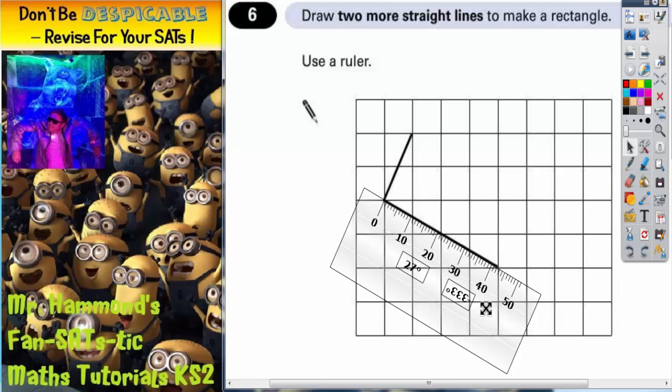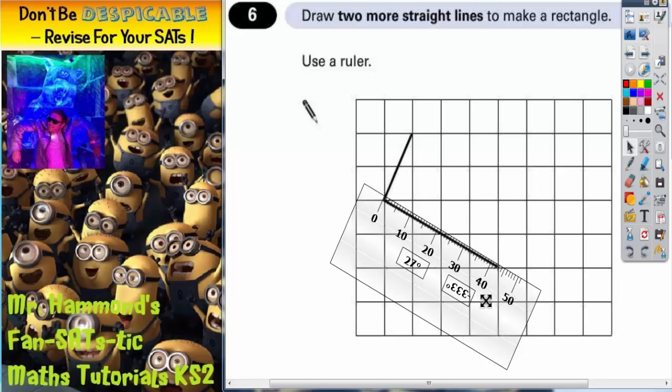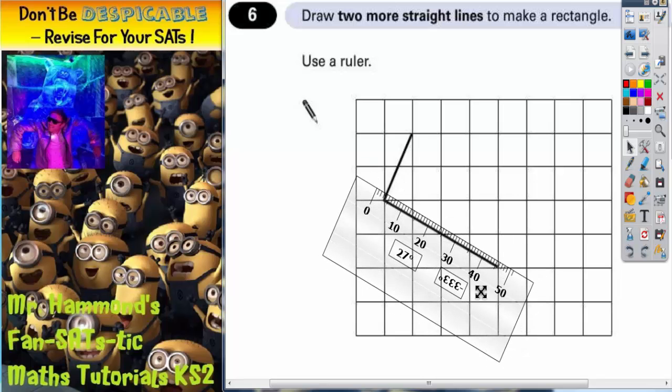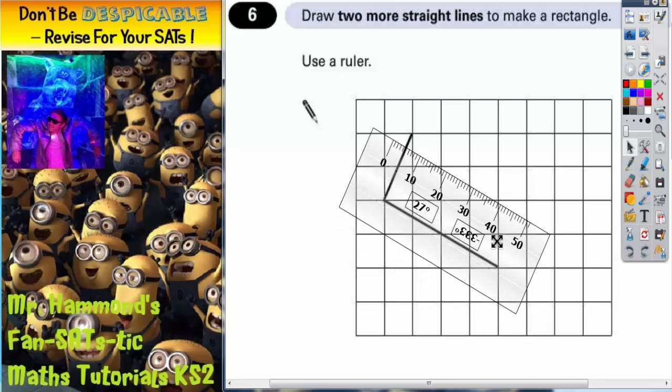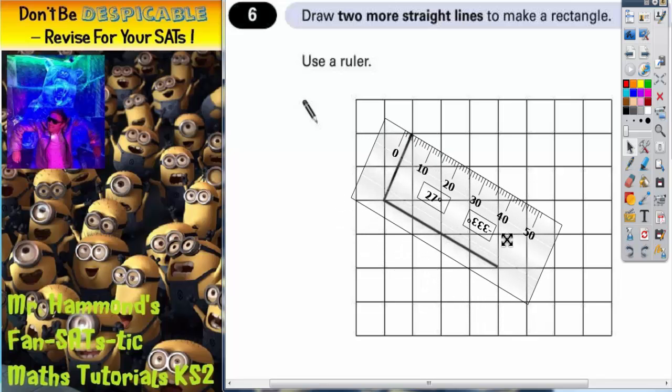So if it's parallel what we need to do is just slide the ruler straight up. Not turning the ruler, just keeping it level, keeping it parallel with that line and placing it on that line there.